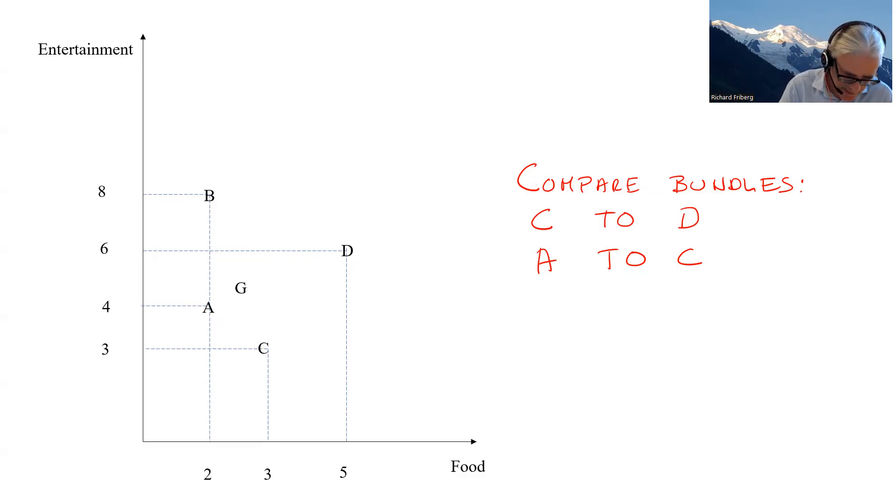And these are curves then that combine or that tie together different bundles between which the consumer is indifferent, so that the consumer values equally, equally highly. Okay, so this is an indifference curve, and it doesn't need to go through A and C. It's just an assumption that we make here. Kind of convenient. Okay, so...